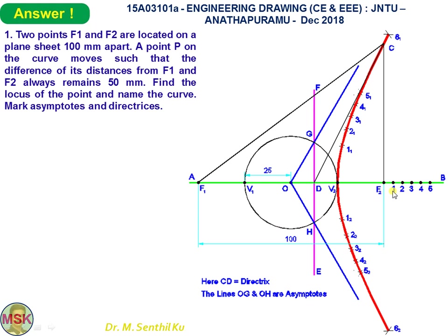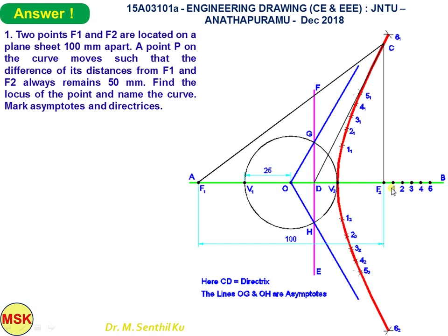The procedure for getting points 1-1, 2-1 and similarly on the bottom side 1-2, 2-2 and so on: for the first point, take the distance V1-1 as radius with F1 as center and draw an arc. Next, with V2-1 as radius and F2 as center, cut an arc on the previous arc, thereby getting point 1-1. Follow the same procedure on the bottom side.